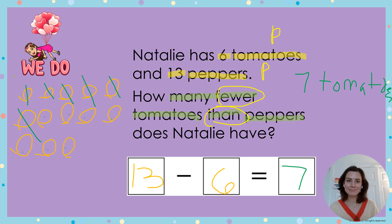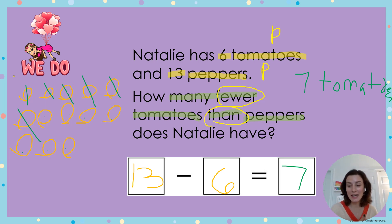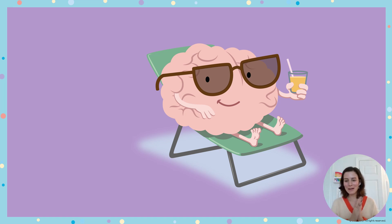Let's count how many we have left: 1, 2, 3, 4, 5, 6, 7. Which means 13 minus 6 equals 7. Seven tomatoes! Learning coach, if you could take a picture and send it to me on Class Dojo, email, or text message so that your student receives credit for working this problem. You can go ahead and take a well-deserved brain break — pause the recording and press play when you're ready to continue.